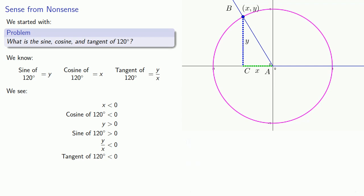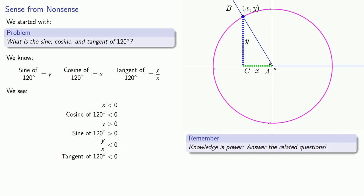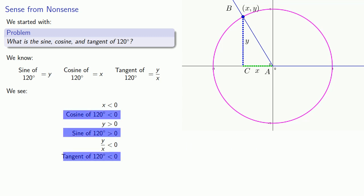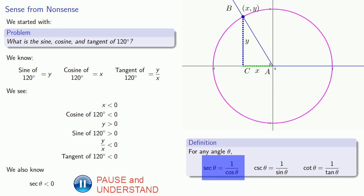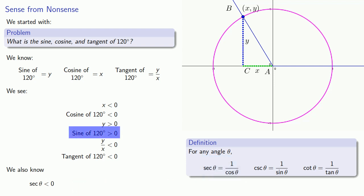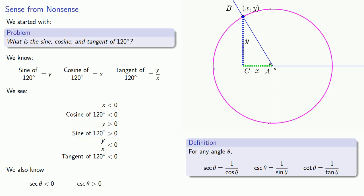While we could stop here, there's a useful thing to remember: knowledge is power — answer the related questions. We've learned something about the cosine, sine, and tangent of 120 degrees, but we know that sine, cosine, and tangent are related to the secant, cosecant, and cotangent — they are the reciprocals of these functions. So once we know the cosine of 120 is negative, then the secant, which is 1 over cosine, is also going to be negative. Likewise, the sine is positive, so the cosecant is going to be positive. The tangent is negative, so the cotangent is negative.